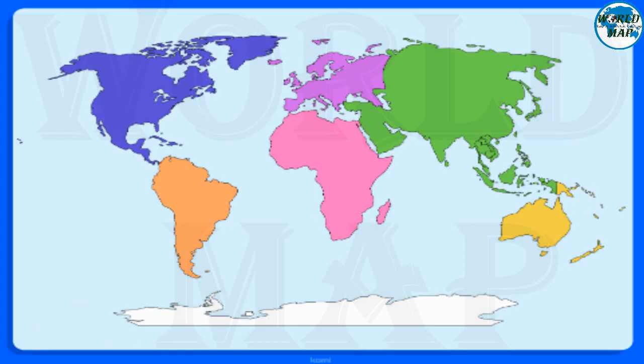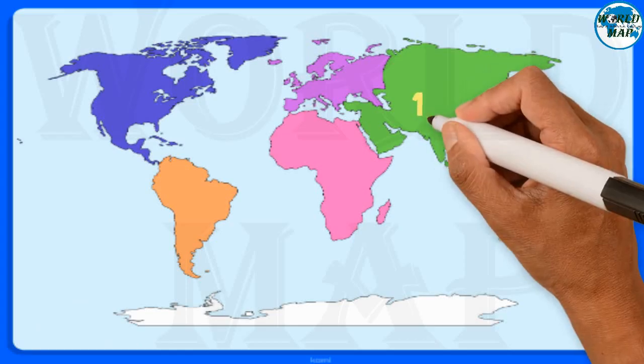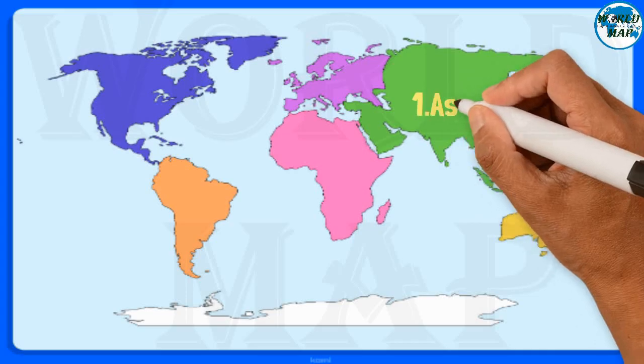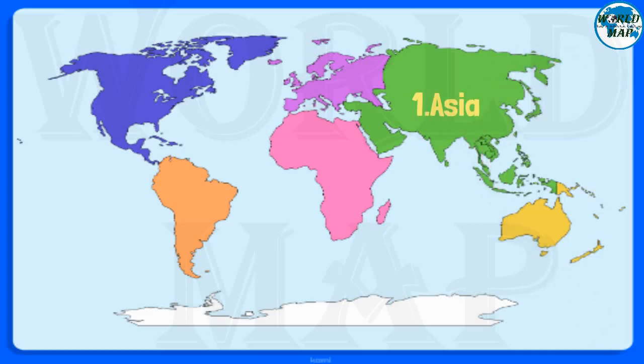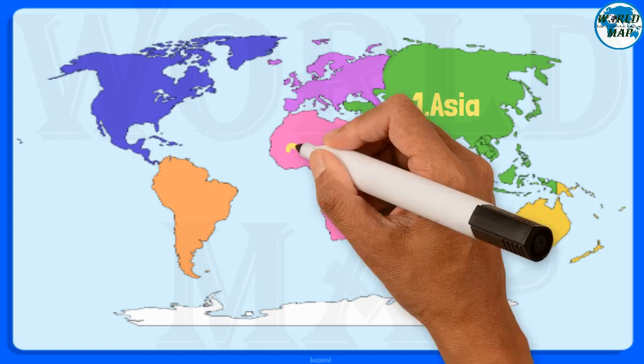Number 1: Asia. It is the largest continent in the world both in terms of area and population. It comprises 48 nations and 60% of the world's population.